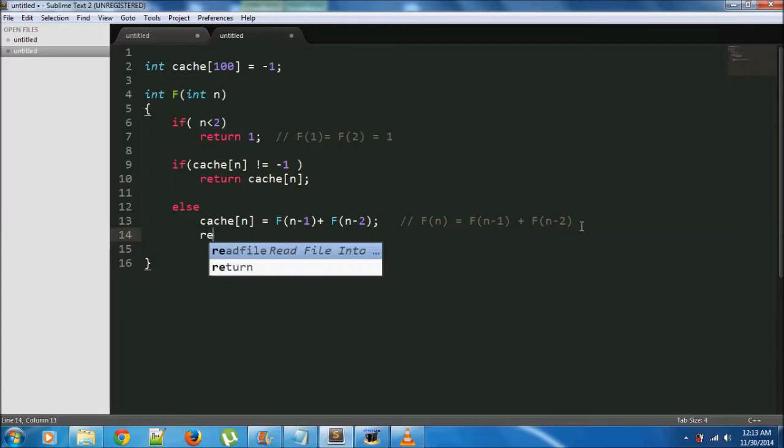The terminal condition will remain the same. However, if cache of n is not equal to minus 1, that is, we have already found this sub-problem, then we just return its results from cache. Else, we store the value of this sub-problem into the cache and then return it.